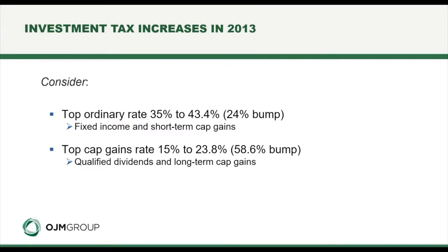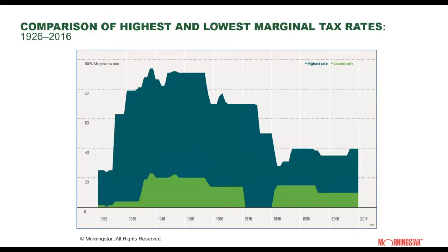Now I will address the new tax rates for 2018 in a moment, but let's take a moment to review the tax changes that took place five short years ago. These changes had a significant impact on investment returns. The top ordinary income rate increased from 35% to 43.4%, which is a 24% increase. This impacted both fixed income returns as well as short-term capital gains. The top capital gains rate increased from 15% to 23.8% for those in the top bracket — a 58.6% bump.